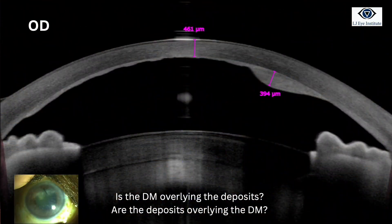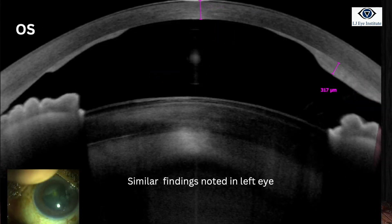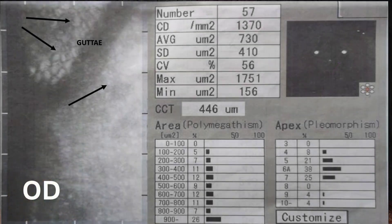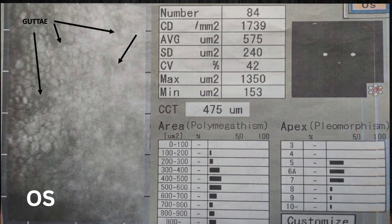Upon looking at her AS-OCT images, we were still unsure whether the Descemet's membrane is overlying the deposits or the deposits are overlying the DM. To our surprise, specular microscopy in both eyes revealed presence of guttae, which led us to even more confusion.